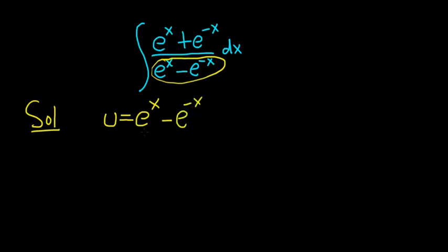And now we'll compute du and let's hope it appears in the numerator. So du is the derivative of u, and now we have to take the derivative of the right hand side. The derivative of e to the x is e to the x, and minus the derivative of e to the negative x is e to the negative x times the derivative of the inside function. Your inside function here is negative x, so its derivative is negative 1.